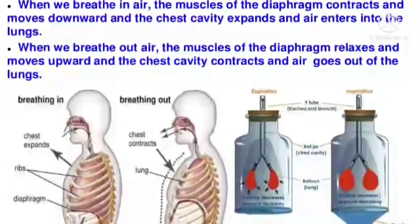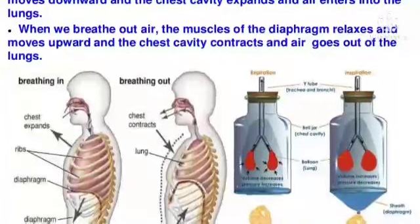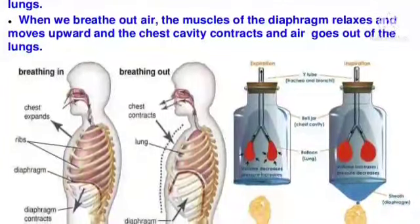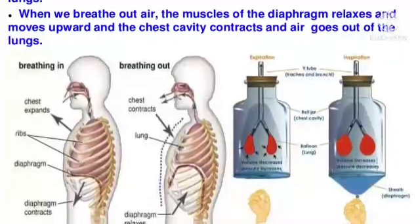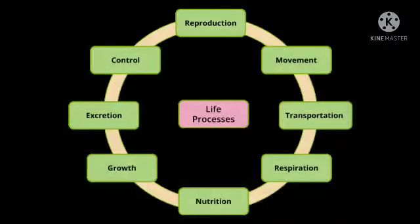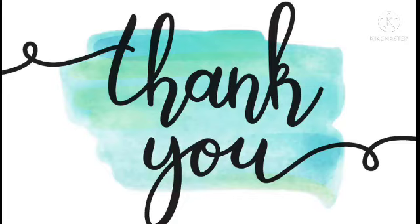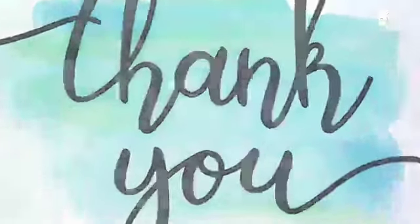Mechanism of breathing: When we breathe in, the muscles of the diaphragm contract and move downward, the chest cavity expands, and air enters the lungs. When we breathe out, the muscles of the diaphragm relax and move upward, the chest cavity contracts, and air goes out of the lungs. Life processes are important to carry out daily life activities — they help us produce energy and maintain homeostasis in the body.